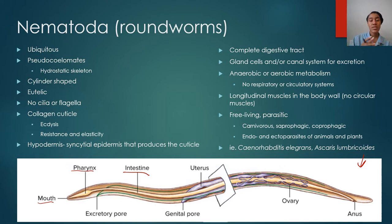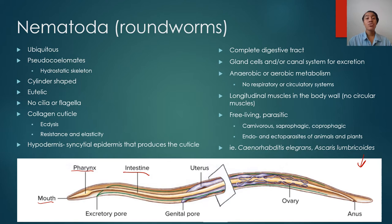Most nematodes are either free-living or parasitic. Some of them are carnivorous, saprophytic, or coprophytic. Carnivorous means they eat other organisms as active hunters. Saprophytic means they eat dead or decaying matter. Coprophytic means they eat the feces of other organisms. On the parasitic side, there are nematodes that are both ectoparasites and endoparasites, and they can be parasites of animals and plants. Some examples you might be familiar with are C. elegans and Ascaris. We'll talk more about Ascaris and various other types of worms at the very end of this chapter.